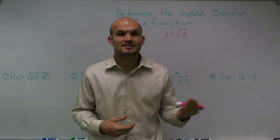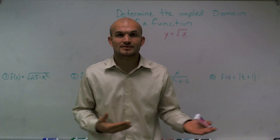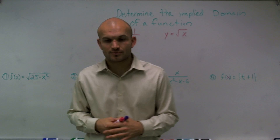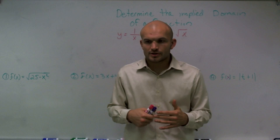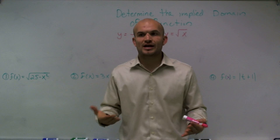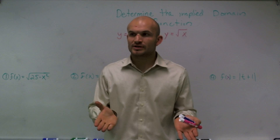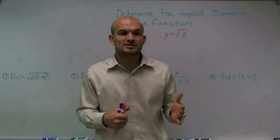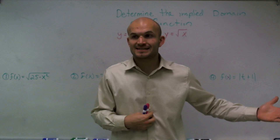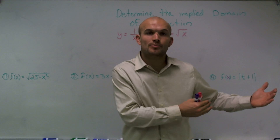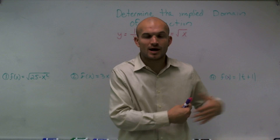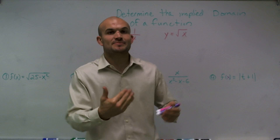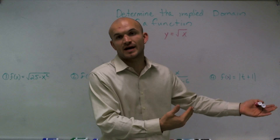A function has independent and dependent values, and it also has your input and your output. Your implied domain is all the values of your input values, or what we call our input variable, which is x, that are going to be defined or make true your output value for y. So what we're saying is, if I plug in a value for x, I need to be getting out a value for y.